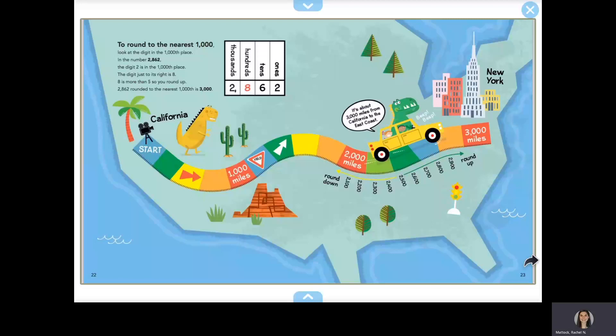To round to the nearest thousand, look at the digit in the thousands place. In the number 2862, the digit 2 is in the thousands place. The digit just to its right is 8. 8 is more than 5, so you round up. 2862, rounded to the nearest thousand, is 3000.